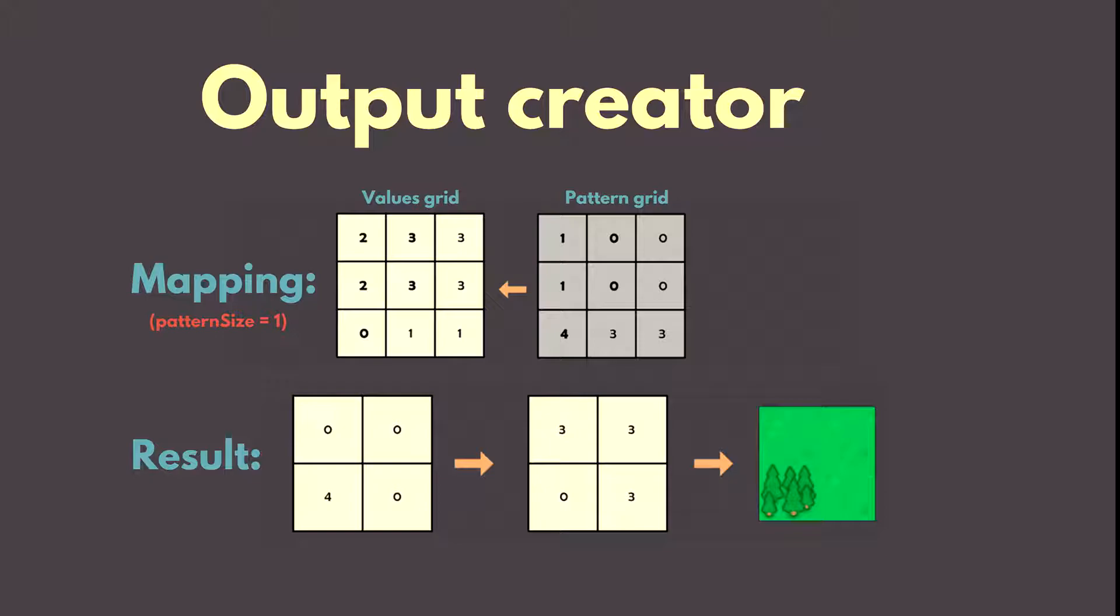What we need to do is map the pattern indices grid back to our values grid. Next, we create a tilemap or any other structure depending on your input from the grid of values.